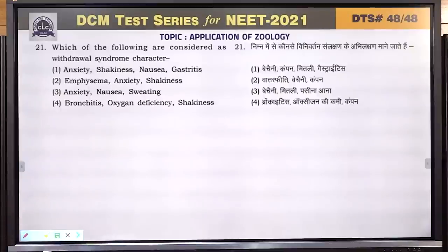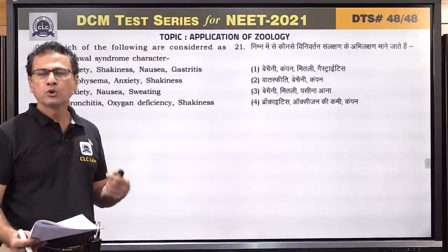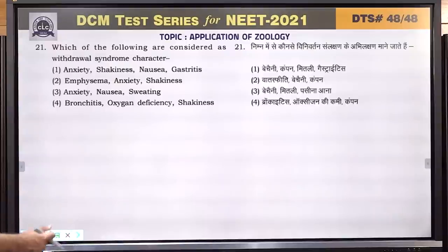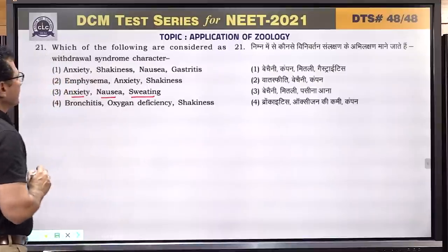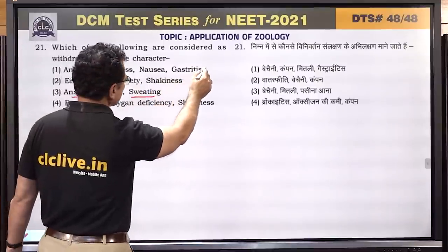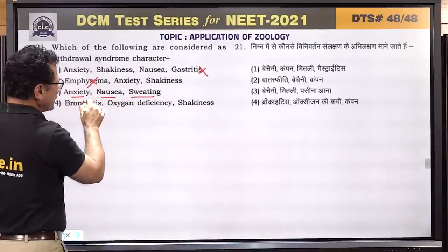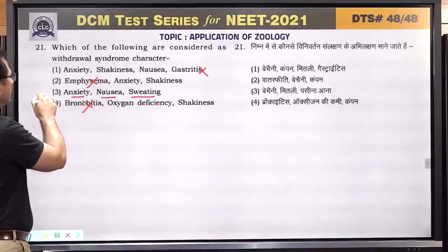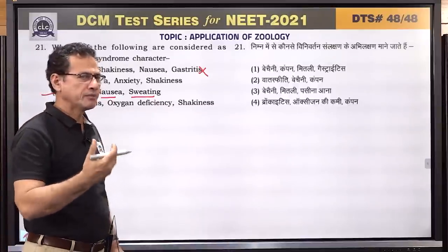Question number 21: which of the following are considered withdrawal syndrome characteristics? When someone stops taking a drug suddenly, withdrawal symptoms appear. These include anxiety, nausea, vomiting, and sweating. Gastritis, emphysema, and bronchitis are not withdrawal symptoms. Shakiness, nausea, and sweating are the correct withdrawal symptoms. Answer is anxiety, nausea, vomiting, and sweating.